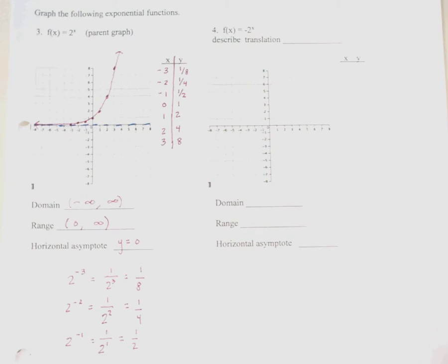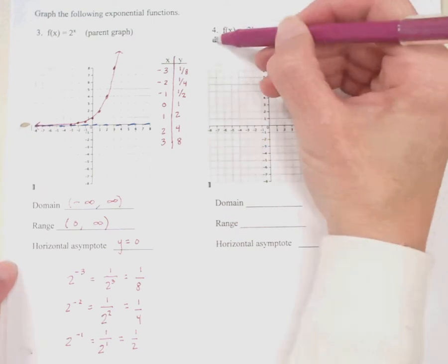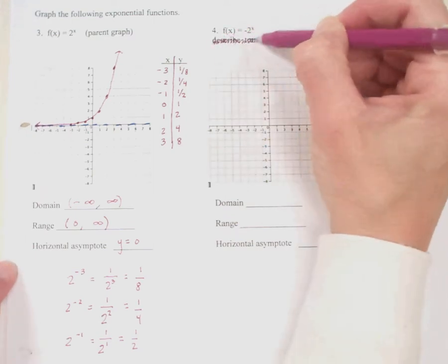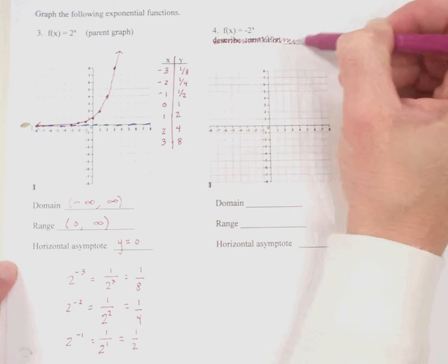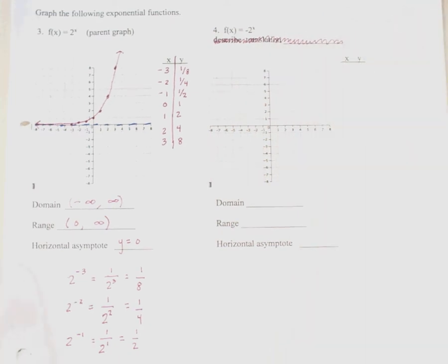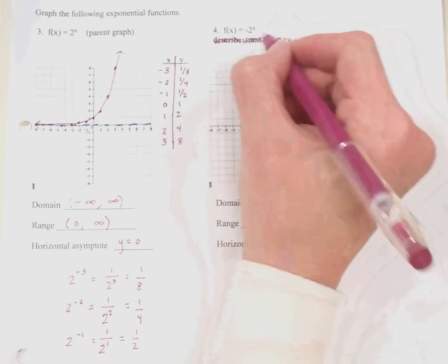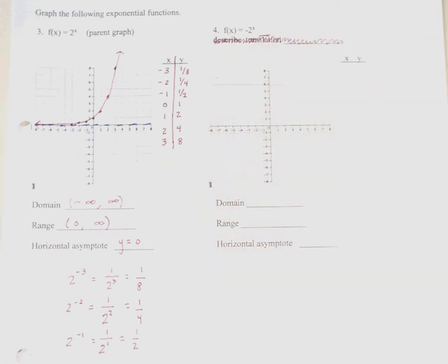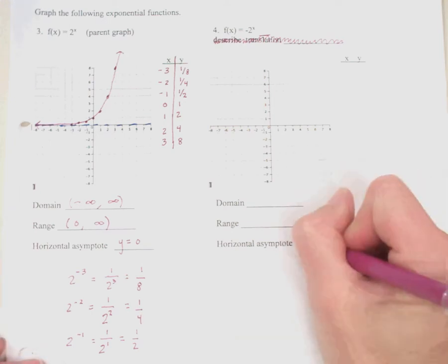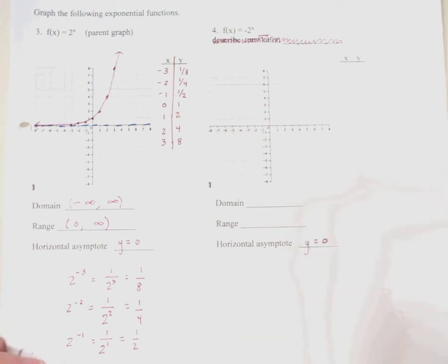Problem number 4: we need to graph the function. We do not need to describe the transformation. It is necessary to determine if there is a shift up or down, which would change the horizontal asymptote — that occurs if there is a plus or minus following the exponent. In this case, there is not, so the horizontal asymptote falls at y equals 0.